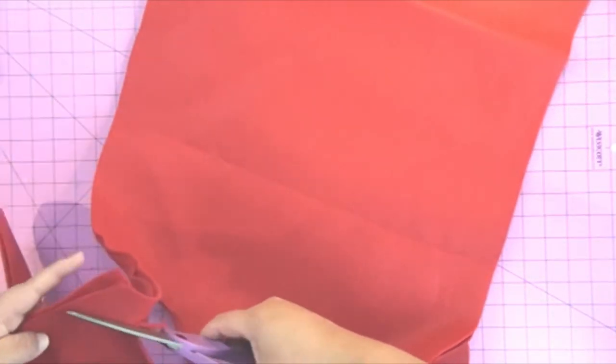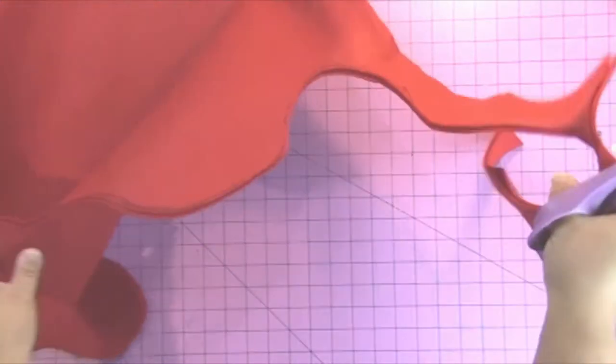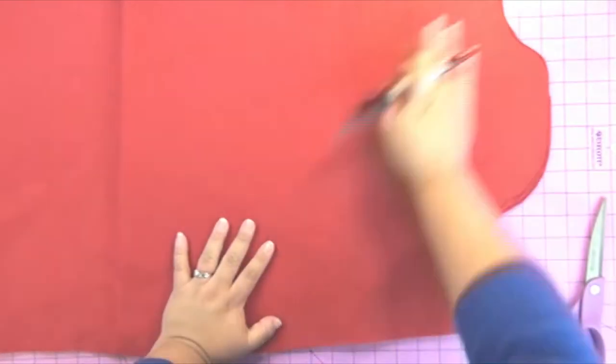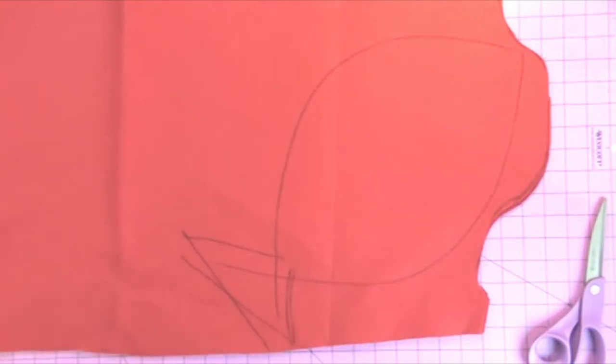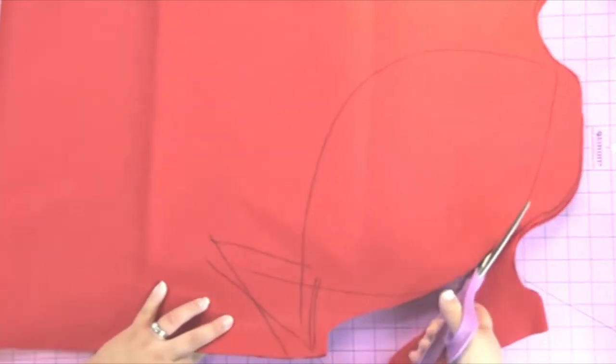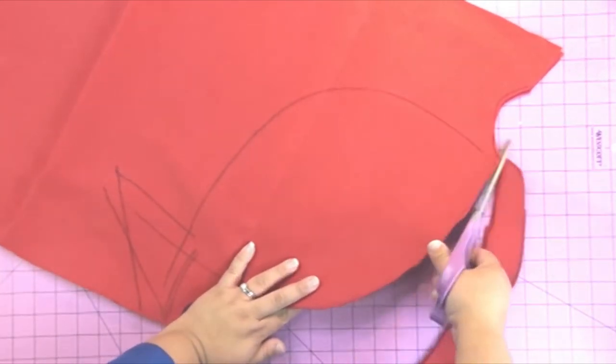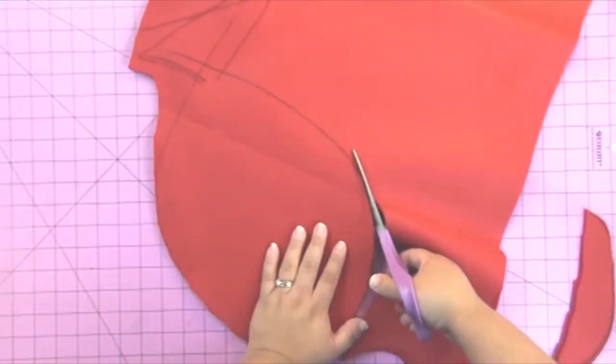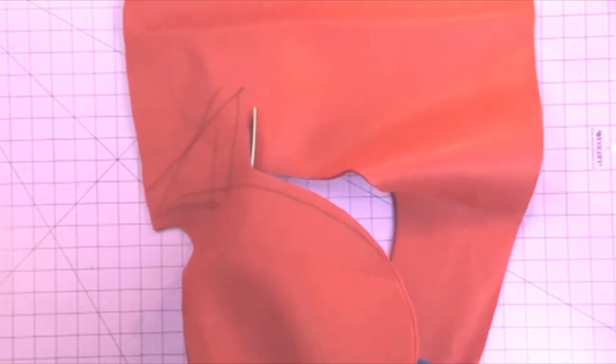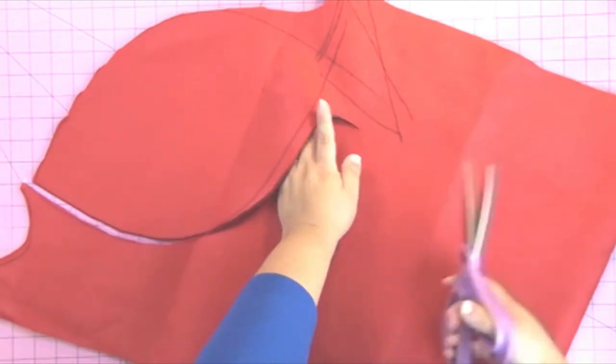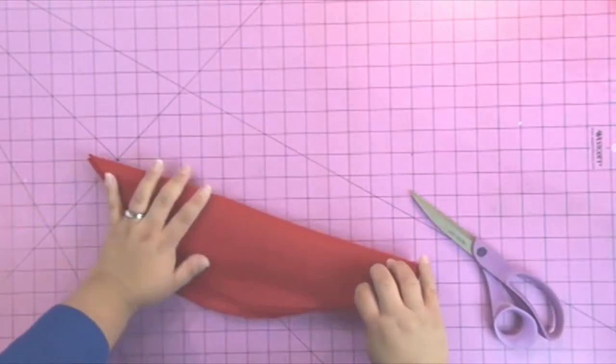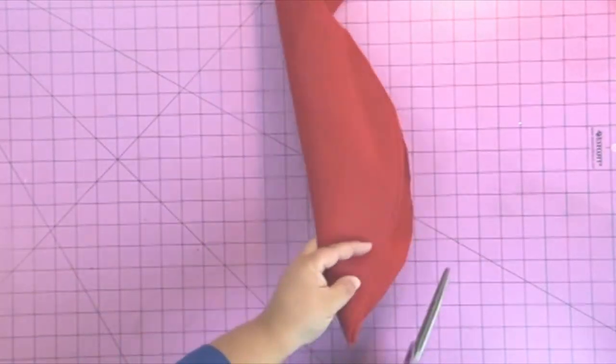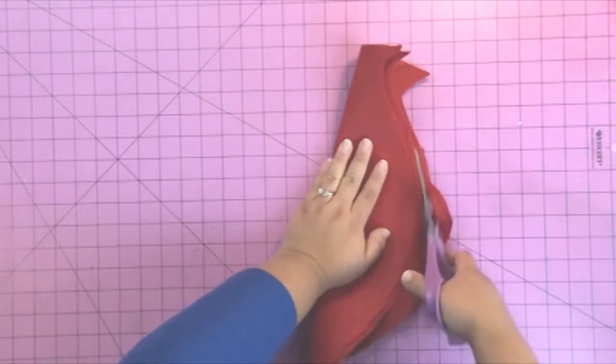I'm using these scissors from Westcott that are adjustable for thick materials, so they work really well to cut through the two layers of this thick felt. Next I'm going to draw a fish shape. I actually end up just cutting out the body on this one because I didn't have enough felt. I just cut around and then I noticed it wasn't really symmetrical while I was cutting, so I folded it in half and trimmed it just a little bit more to make it more symmetrical.